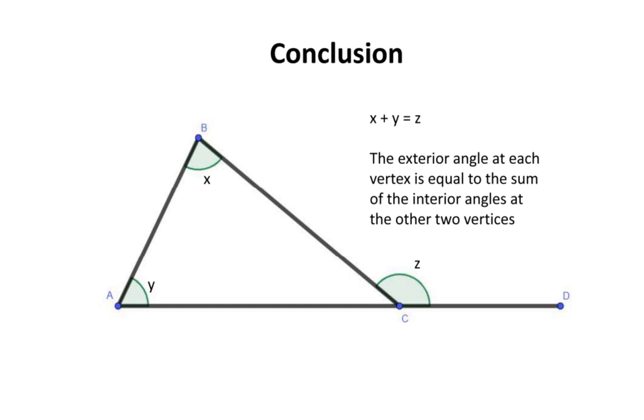We can now conclude that the exterior angle at each vertex is equal to the sum of the interior angles at the other two vertices. In other words, if you take these two interior angles and add them up, that should give you this exterior angle. Simply put, x plus y is equal to z.